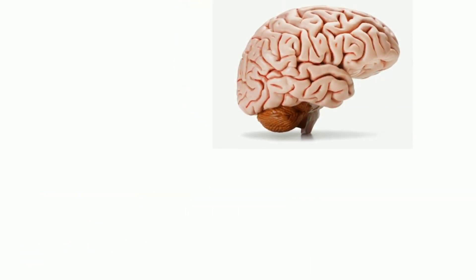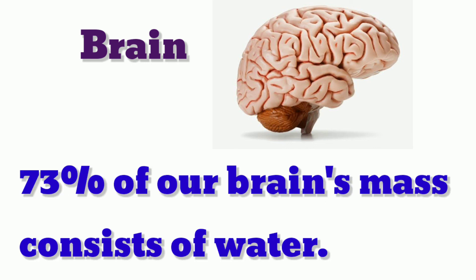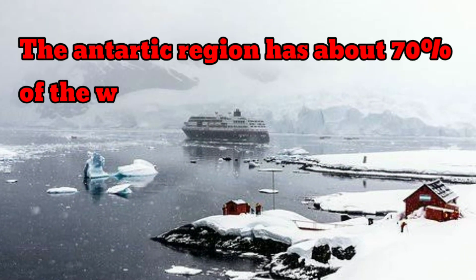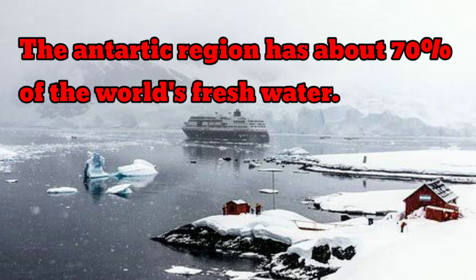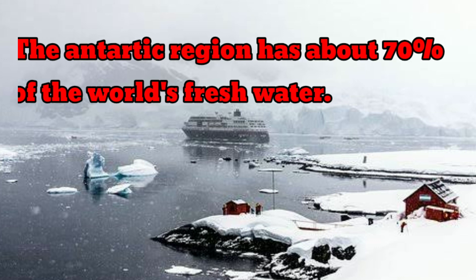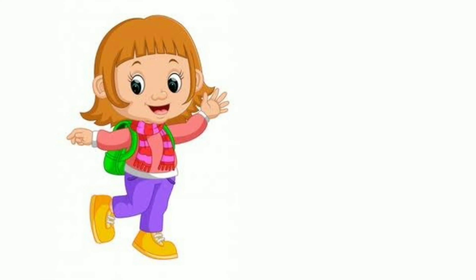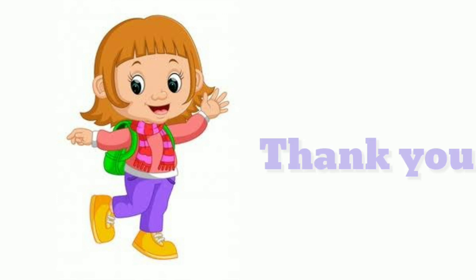And children, observe this picture — can you name this? Yes, our brain. Good children, do you know? 73% of our brain's mass consists of water. And children, the Antarctic region has about 70% of the world's fresh water. Ullagin nere sula cheeagiradu, 70% of the world's fresh water. Thank you, children.